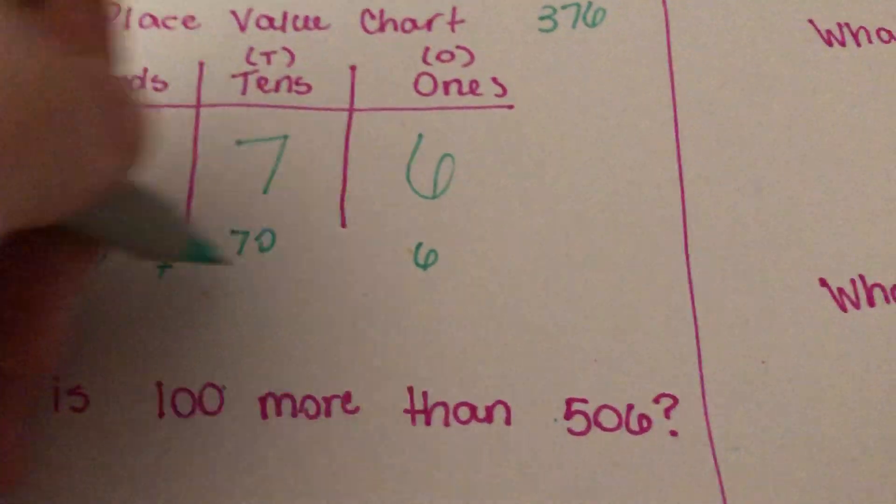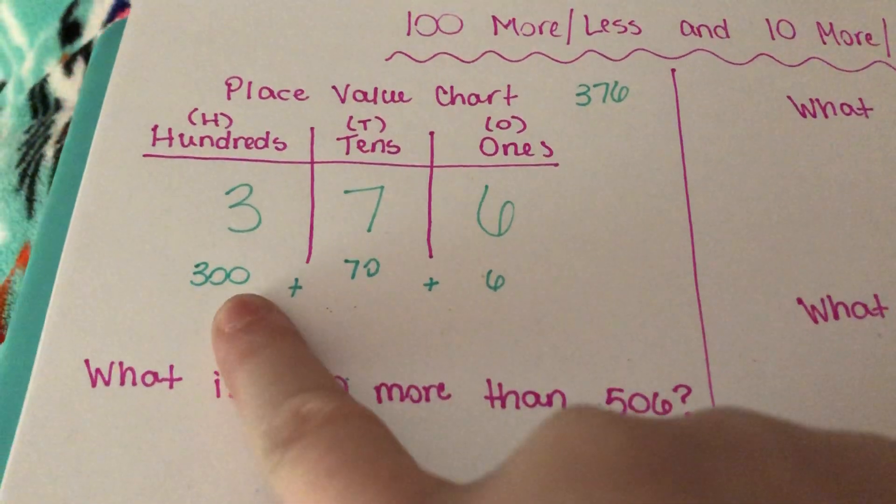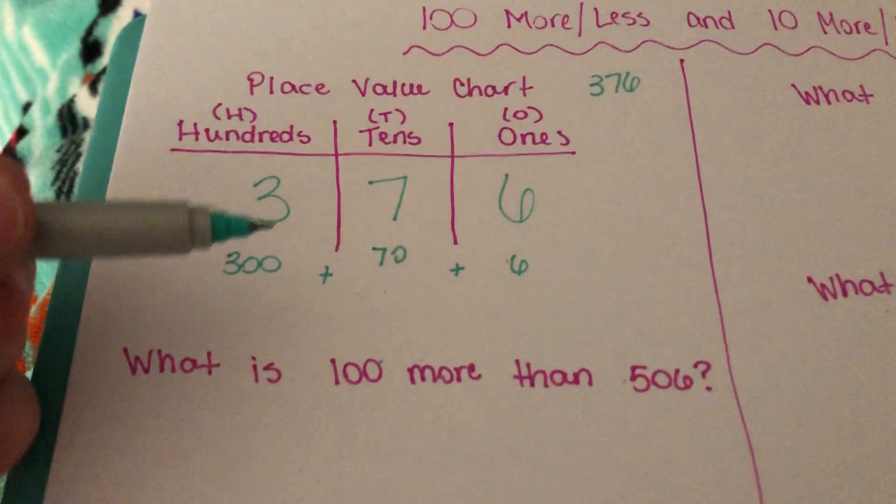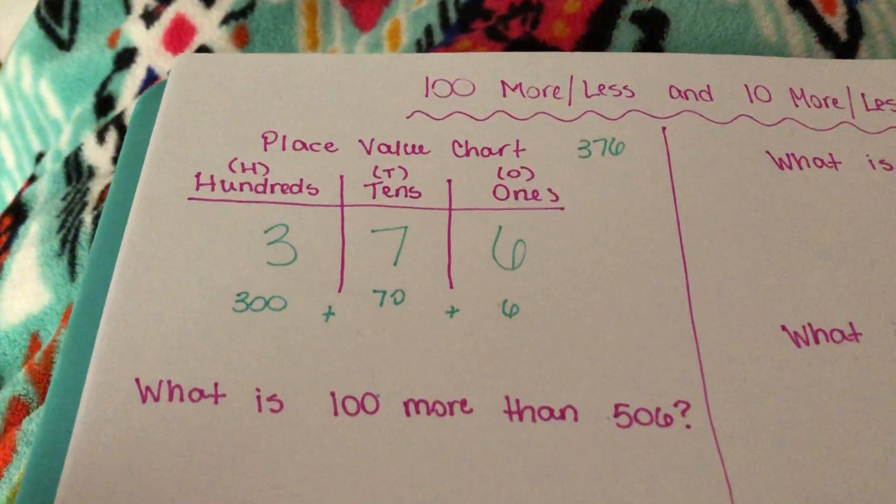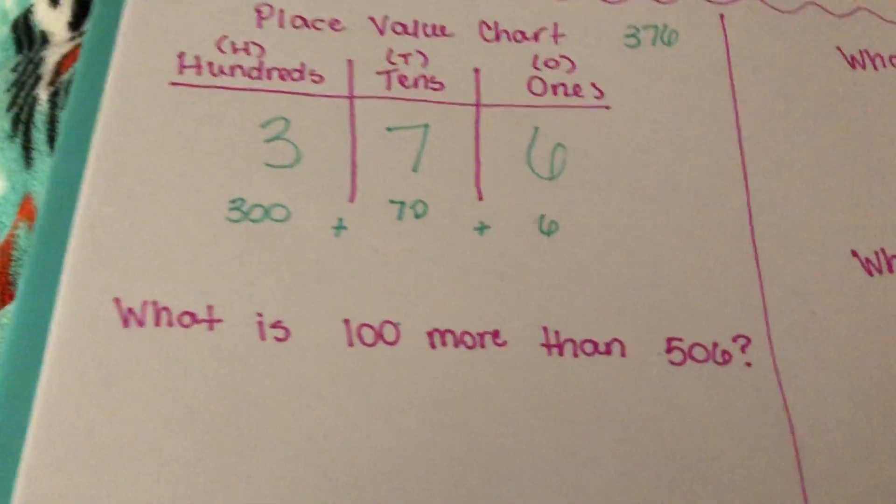So if you ask your student about expanded form, they'll be able to say that 376 is 300 plus 70 plus 6. This chart is here to show you the values of each of those numbers. So just make sure that your child has that basic understanding right there.